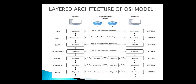At the sender side, encapsulation is performed at every level, and decapsulation is performed at the receiver side. Finally, data is transmitted and displayed at the receiver device. Each layer on the sender side communicates with all other layers, but every adjacent layer — for example, the sender's application layer — communicates with the application layer of the receiver using a peer-to-peer protocol. All layers at the sender side communicate with the respective layer at the receiver side.